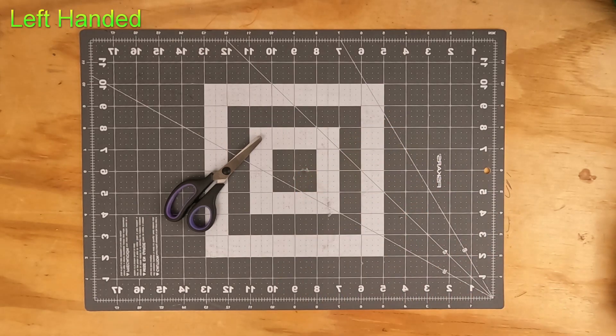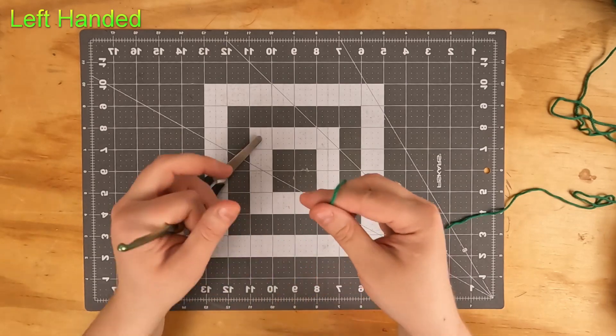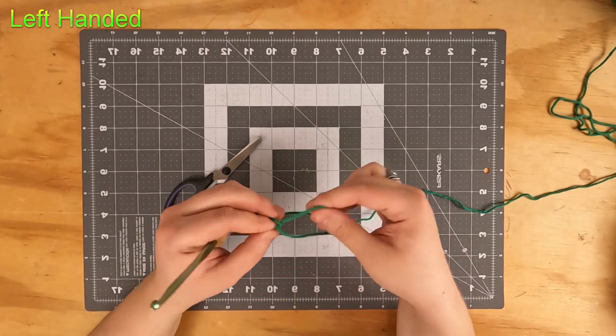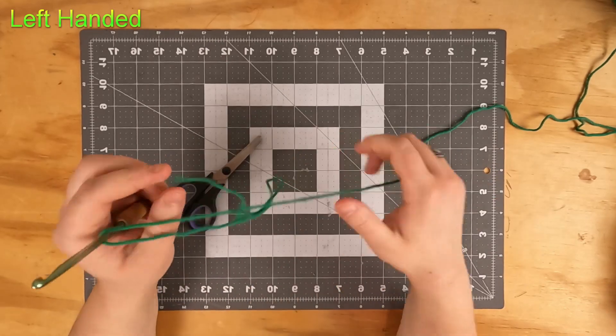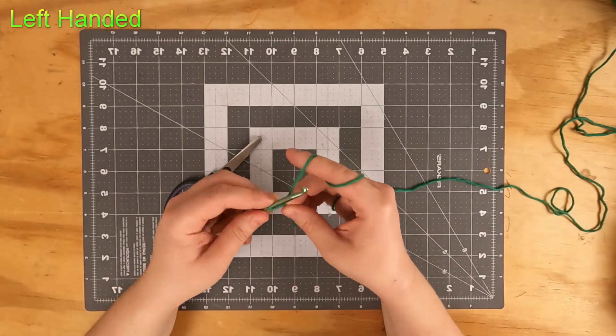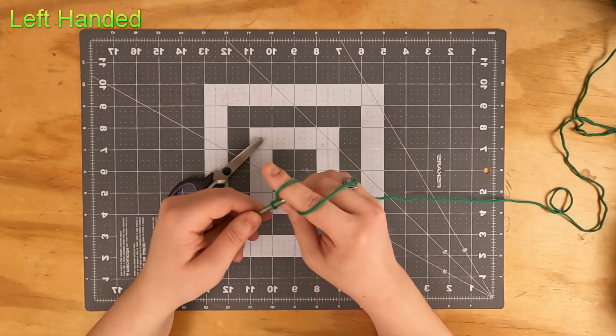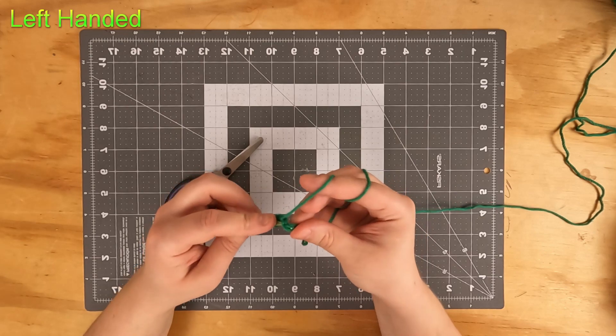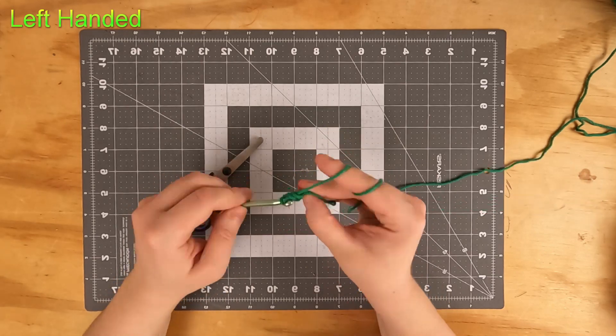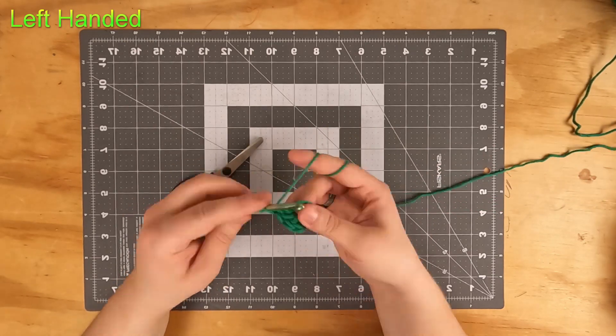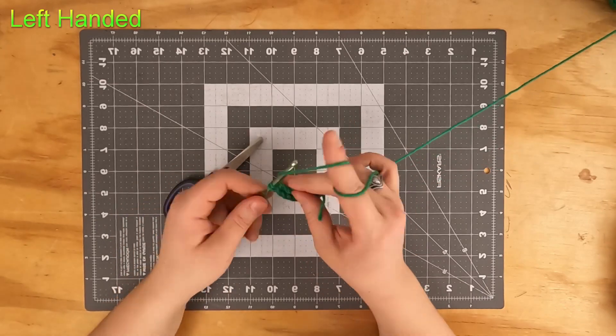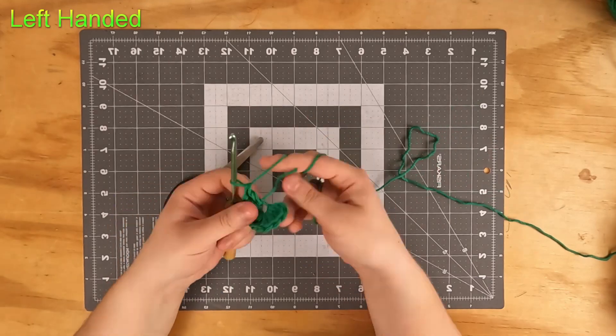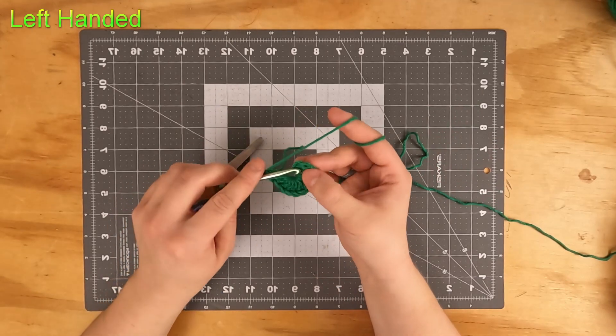Let's get started with our green cotton yarn. We're going to make our loop right here, cinch that down, go ahead and chain, and then put 12 double crochets into that first chain.